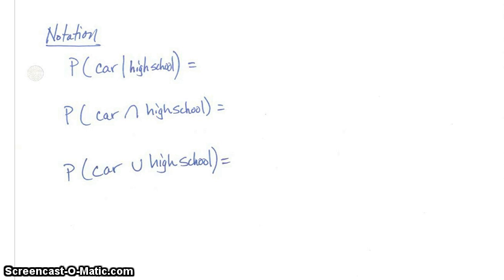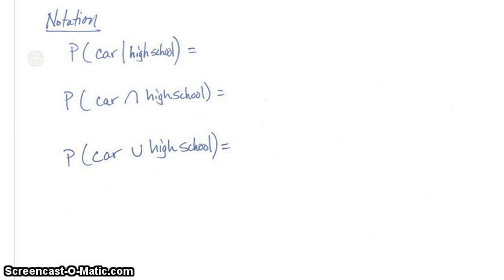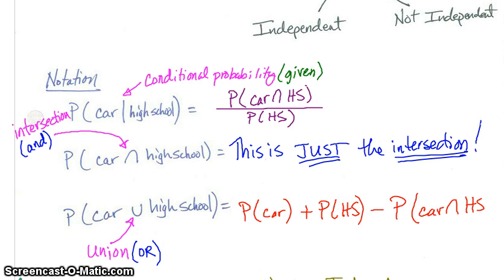Next up, let's look at notations. We have the probability of car given high school — that's a conditional probability, equal to the probability of the intersection between car and high school divided by the probability of high school. In our second case, we have the intersection, which means 'and' — you cannot just multiply these two; it's just the intersection. Lastly, we see our union, which is the probability of car union high school, meaning 'or': the probability of car plus the probability of high school minus the probability of the car intersecting high school.